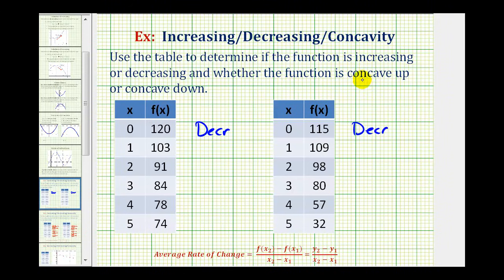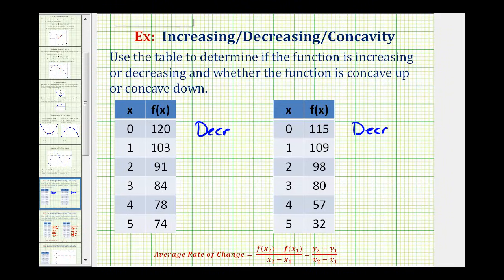Now to determine if the function is concave up or concave down, we need to determine if the rate of change of the function increases or decreases as x increases. Since this is an algebra class and we don't have the equation of the function, we'll have to find the average rate of change to determine concavity. If the rate of change is increasing as x increases, the function is concave up. If the rate of change is decreasing as x increases, the function is concave down. To determine our average rates of change, we'll determine the change in the function values and divide by the change in the x values.